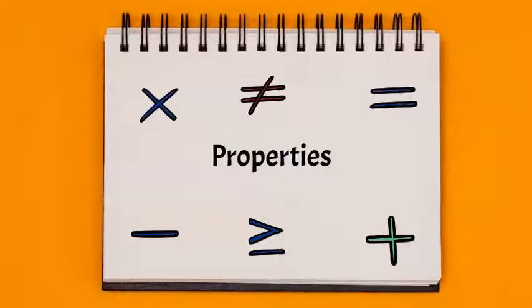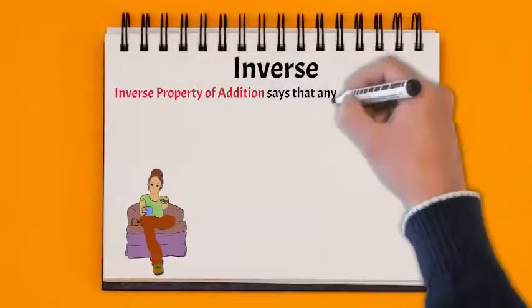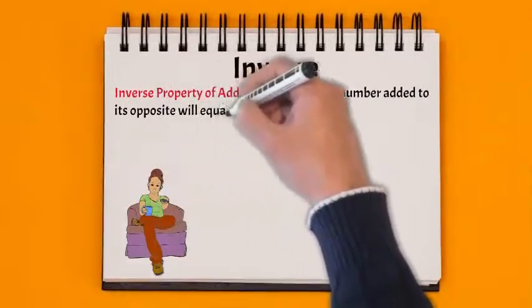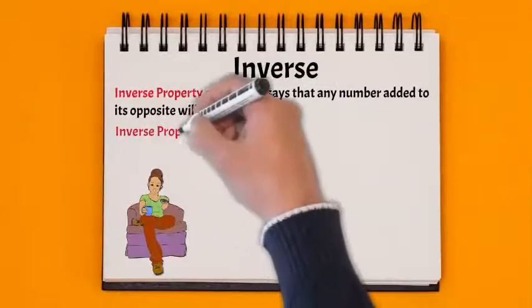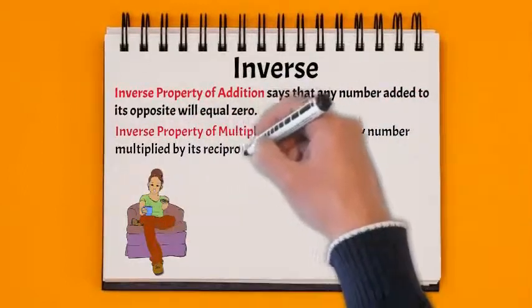We have the inverse property. The inverse property of addition says that any number added to its opposite will equal zero. And the inverse property of multiplication says that any number multiplied by its reciprocal is equal to one.